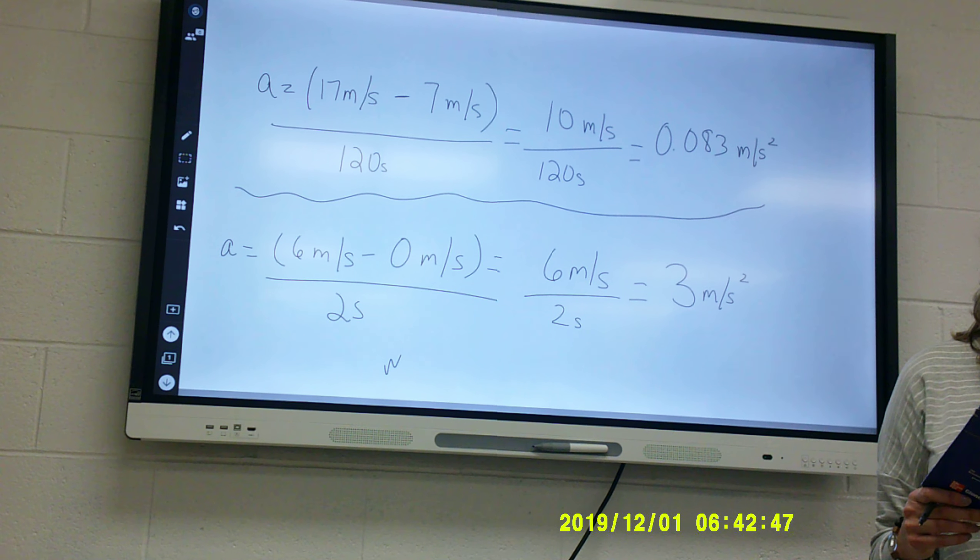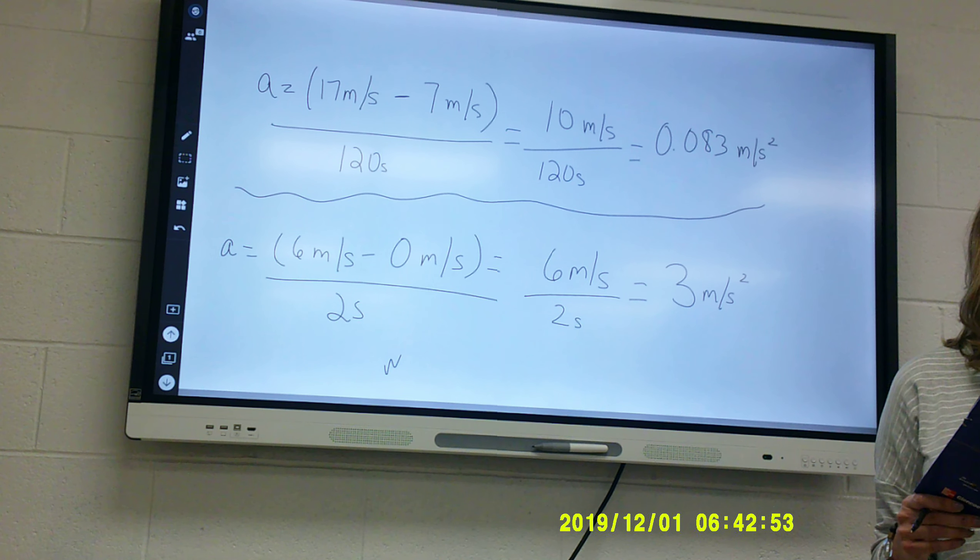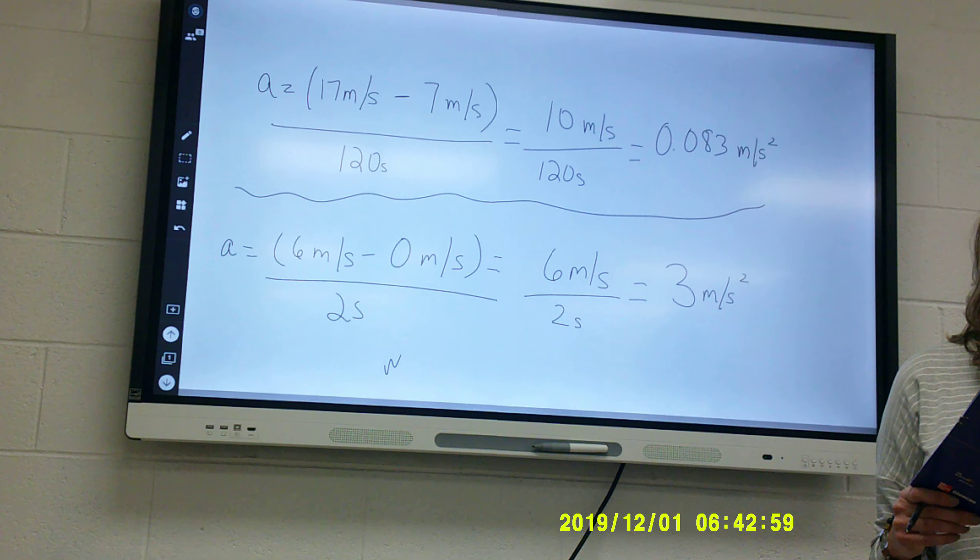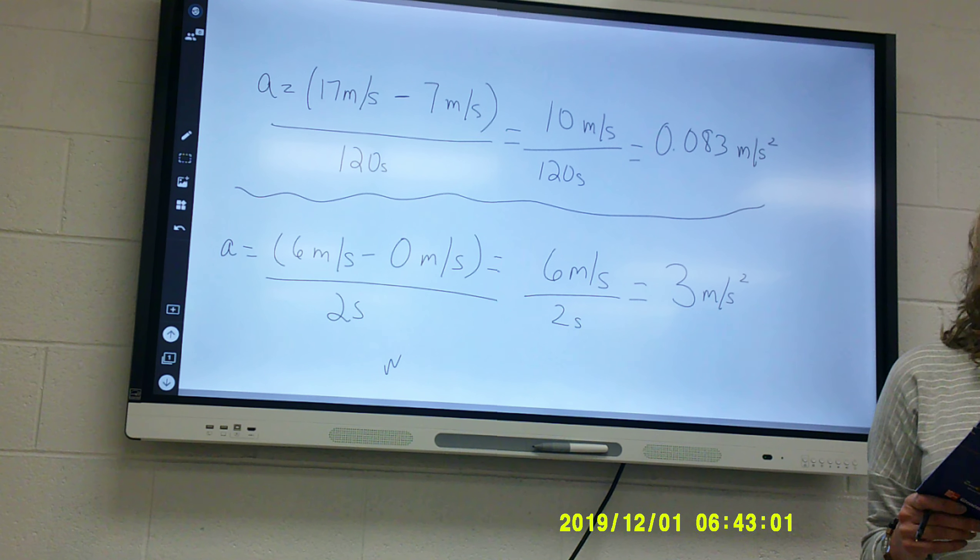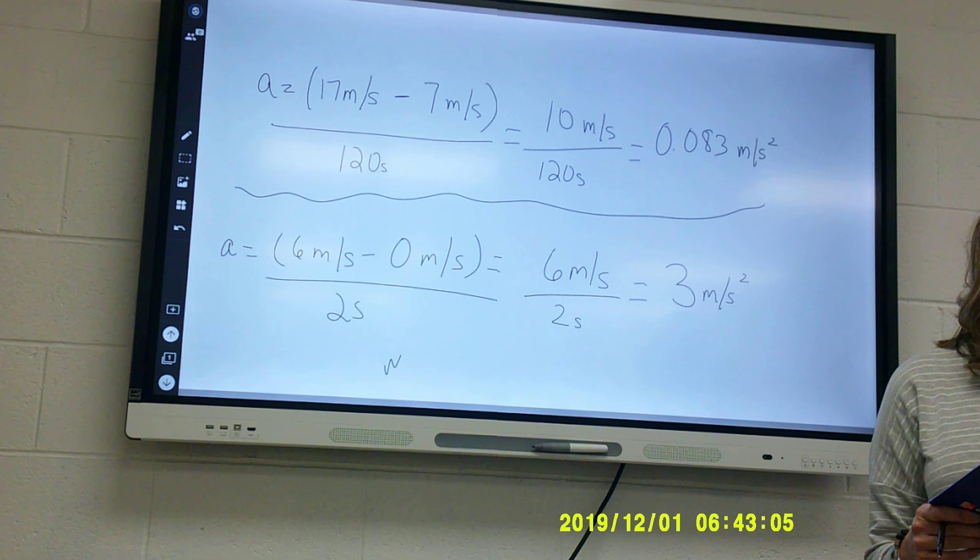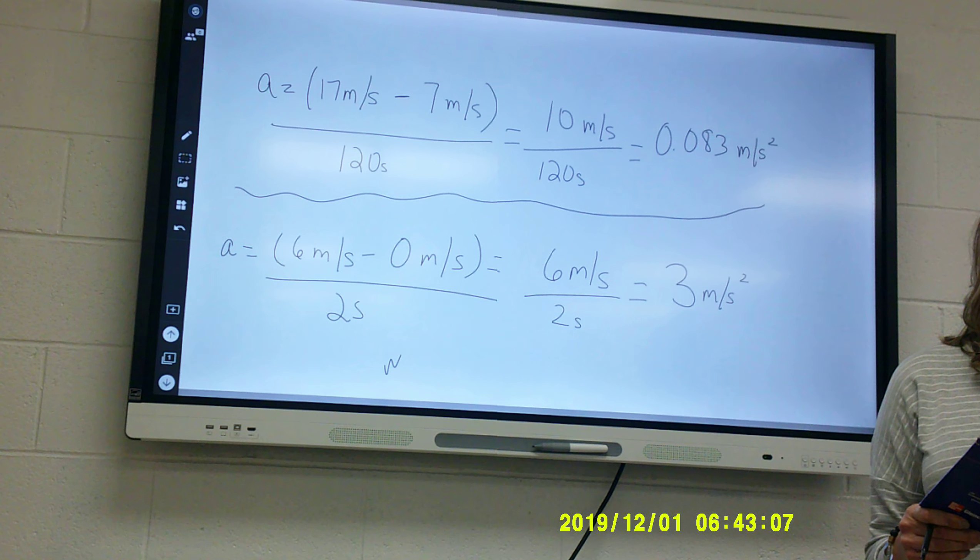You could calculate your acceleration from the equation on the previous page. Final speed minus initial speed divided by time. So, it would be 6 meters per second minus 4 meters per second divided by 5, which would be 0.4 meters per second squared. When you speed up, your final speed will always be greater than your initial speed. But when you slow down...